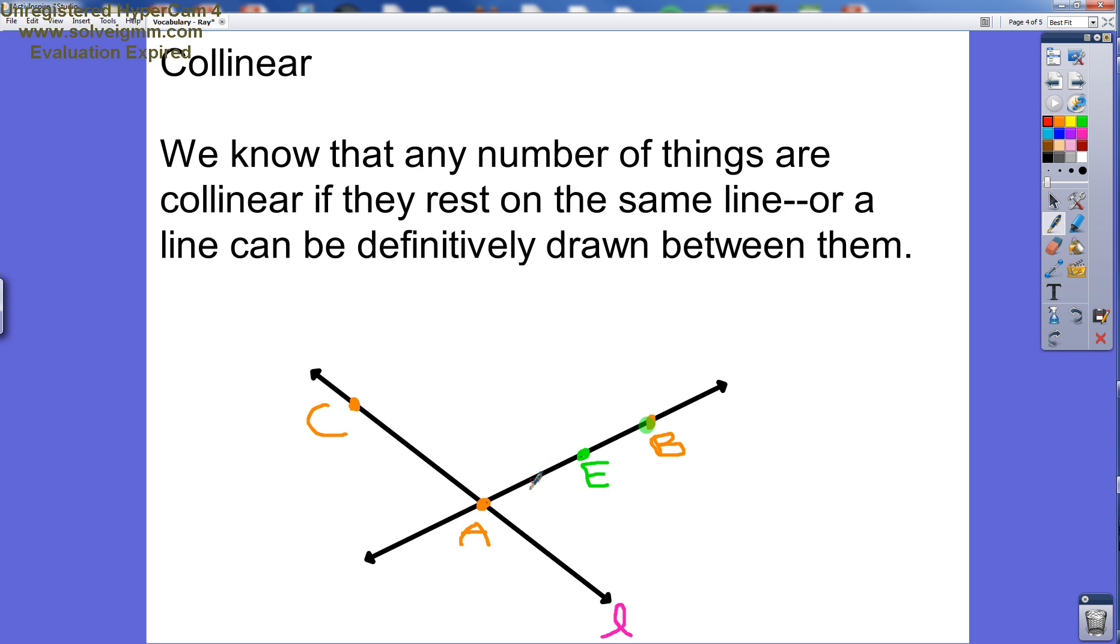So let's talk about sort of visually what's going on. So for example, here we have A, E, and B are all on this line right here. Let's call this line M.